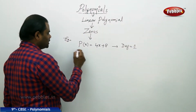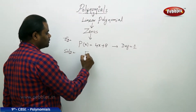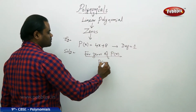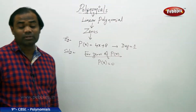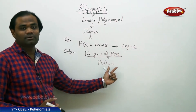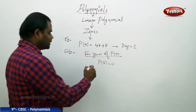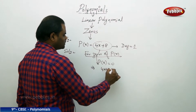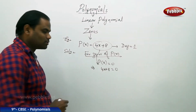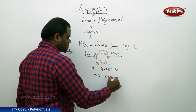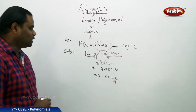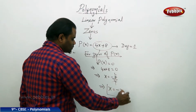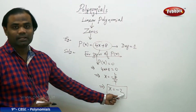In order to find the zeros of this polynomial, for zeros of p(x), the condition is p(x) = 0. We know that as the basic definition. So p(x) = 4x + 8, which must equal 0. And 4x + 8 = 0 implies x = -2. Therefore, the zero of this linear polynomial is -2.